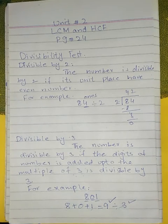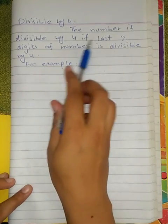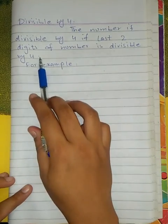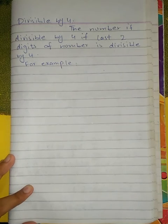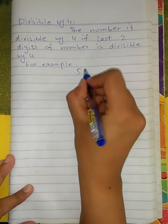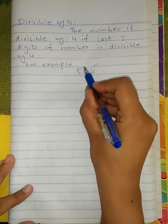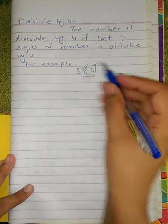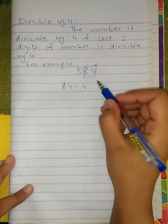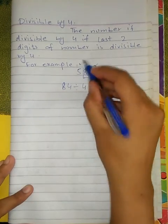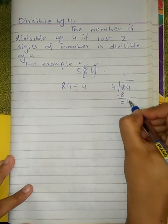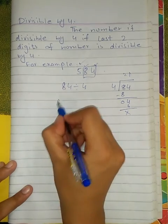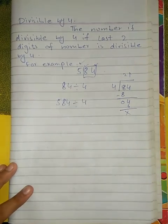Divisibility by 4: a number is divisible by 4 if its last two digits (ones and tens place) are divisible by 4. For example, the number 584 — the last two digits are 84. Since 84 ÷ 4 = 21 with no remainder, the number 584 is divisible by 4.